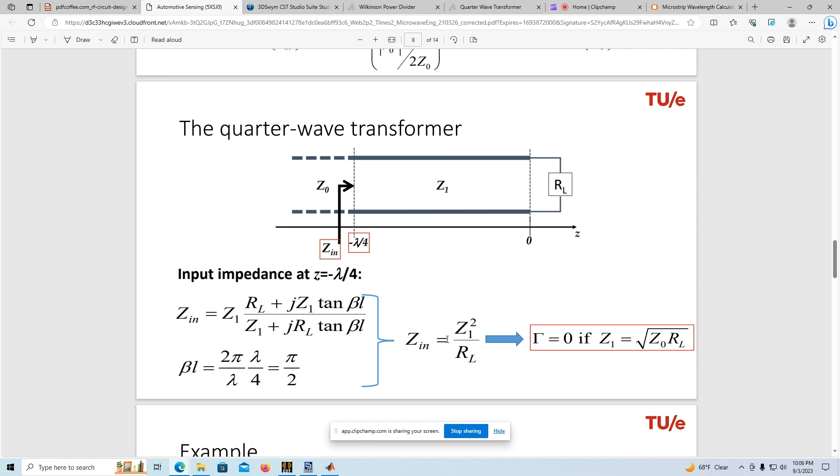This flows from the formula here for Zin, and when L is lambda over 4, beta L becomes pi over 2, the tangents here approach infinity, and Zin then reduces to Z1 squared over RL. And again, when Z1 is equal to the square root of the product Z naught RL, Zin in fact becomes Z naught, and you have a perfect match.